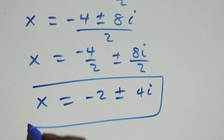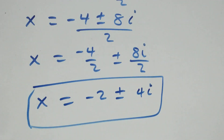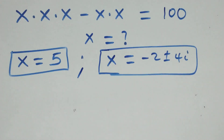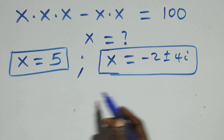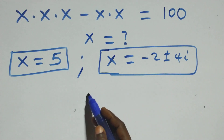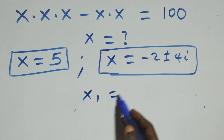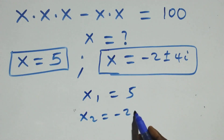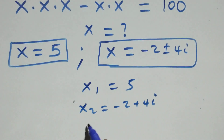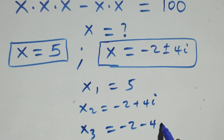All together, we have three solutions to this problem: one real and two complex. x1 equals 5, x2 equals minus 2 plus 4i, and x3 equals minus 2 minus 4i.